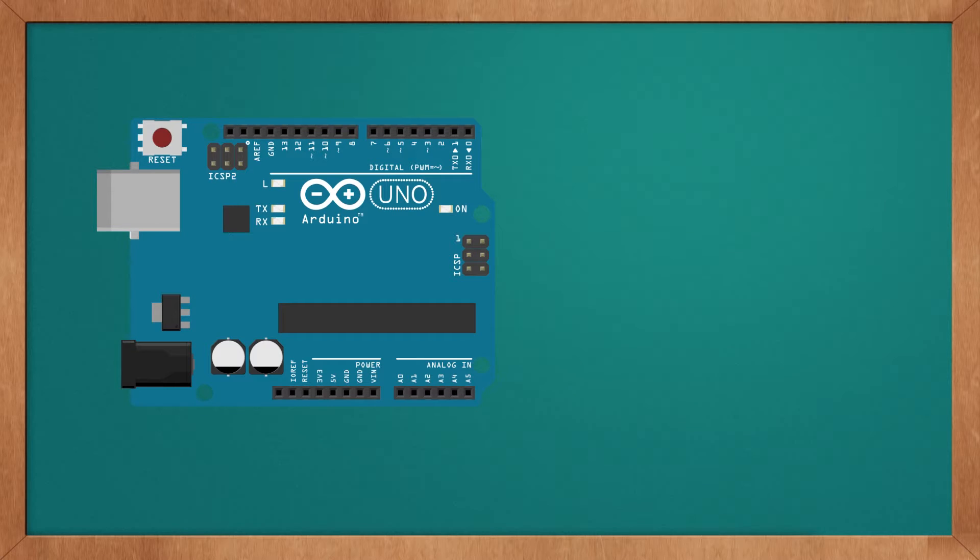Finally, the Arduino has a set of functionalities that allow the conversion of analog values to digital ones. It contains a 10-bit ADC with 6 separate inputs.